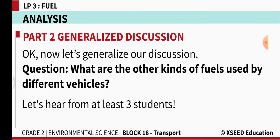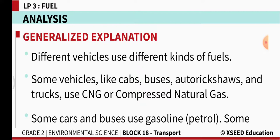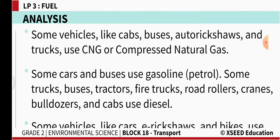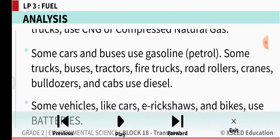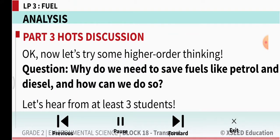Different vehicles use different kinds of fuels. Some vehicles like cabs, buses, auto rickshaws, and trucks use CNG or compressed natural gas. Some cars and buses use gasoline, that is petrol. Some trucks, buses, tractors, fire trucks, road rollers, cranes, bulldozers, and cabs use diesel.